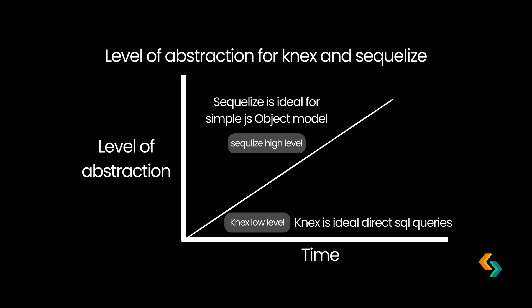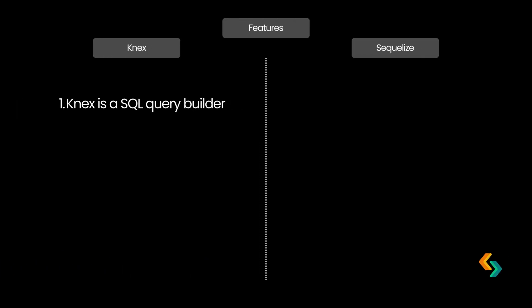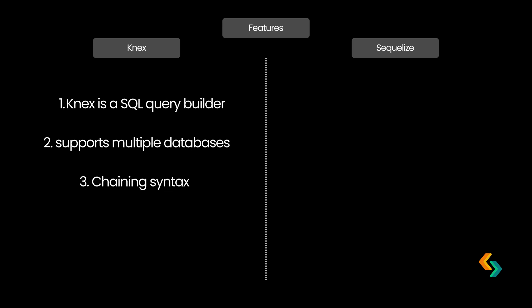Here's a closer look at each tool's core features. Knex.js is a SQL query builder, not an ORM. This means you're still writing SQL, but in a more structured way through JavaScript. Knex.js supports multiple databases with minimal configuration changes, so whether you're working with PostgreSQL, MySQL, or SQLite, Knex.js has you covered. One special feature of Knex.js is its chaining syntax — you can build complex SQL queries step-by-step, which makes it super flexible. Need a highly customized join or a specific ordering? Knex.js's fluent syntax lets you chain methods together, making it easy to read and modify. Knex.js can also be integrated with Bookshelf.js if you need simple ORM features like models and relationships without going full ORM.